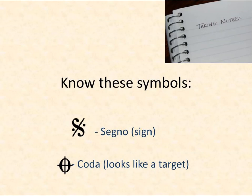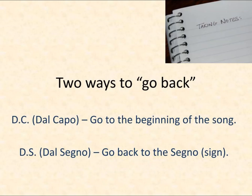When we see the target — the O with the plus sign through it — we call that the coda. That means at some point you're going to skip to this, sometimes called the ending. There are two ways they can send us back. With the DC, Da Capo, it goes back to the very beginning of the song — measure one. With the DS, Dal Segno, we go back to that sign.